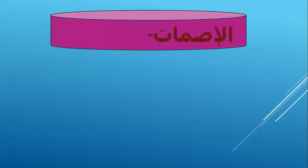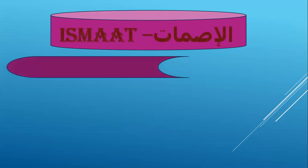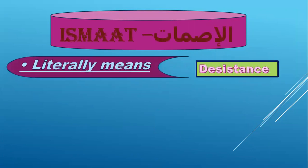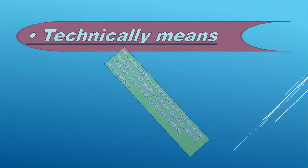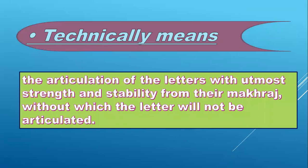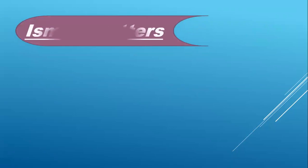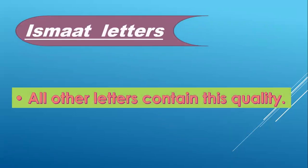The opposite of islaq is ismat. Literally, ismat means desistance. Technically, it means the articulation of the letters with utmost strength and stability from their makhraj, without which the letter will not be articulated. That means it is not easy to pronounce ismat letters. All other letters — all letters except the islaq letters — contain this quality.